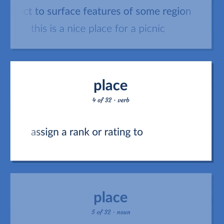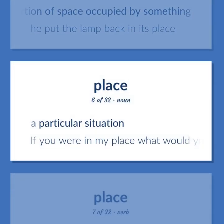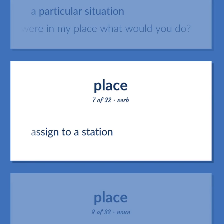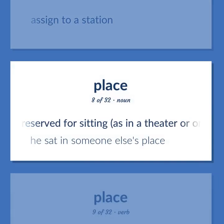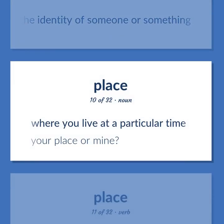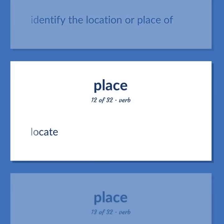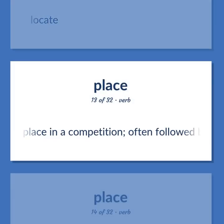Assign a rank or rating to. The particular portion of space occupied by something. He put the lamp back in its place. A particular situation. If you were in my place what would you do? Assign to a station. A space reserved for sitting, as in a theater or on a train or airplane. He sat in someone else's place. Recognize as being. Establish the identity of someone or something. Where you live at a particular time. Your place or mine. Identify the location or place of. Locate. Take a place in a competition, often followed by an ordinal.